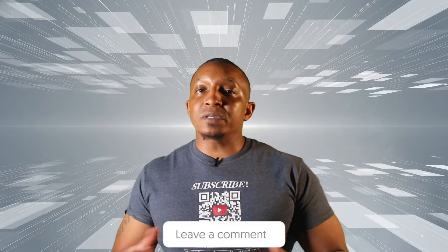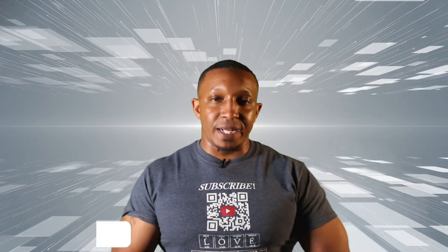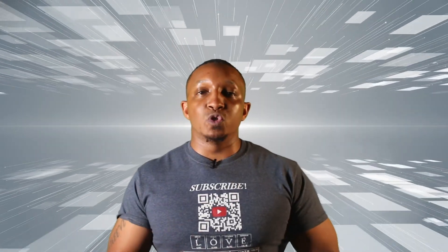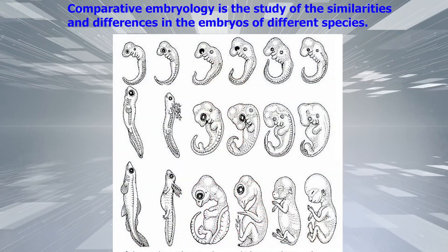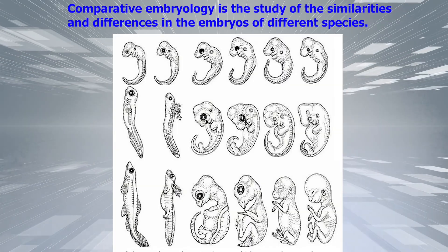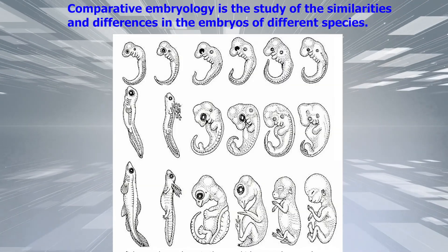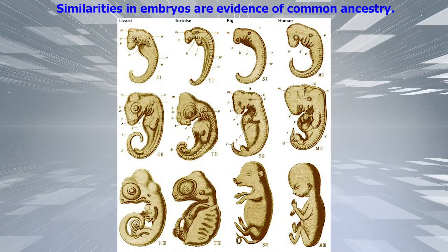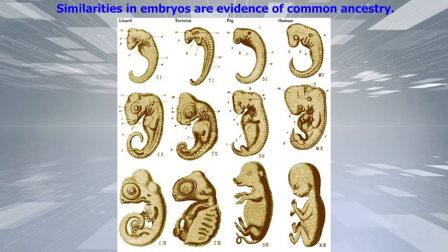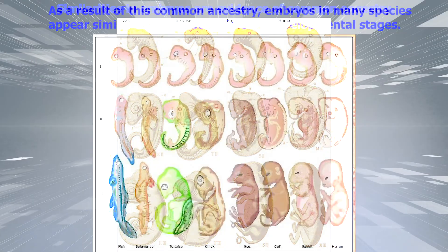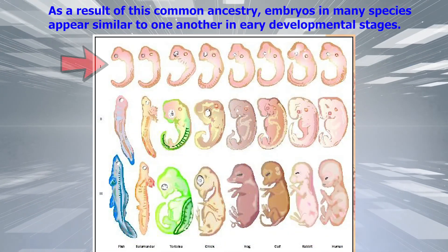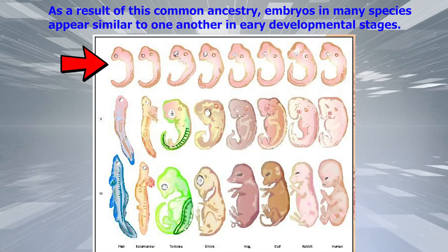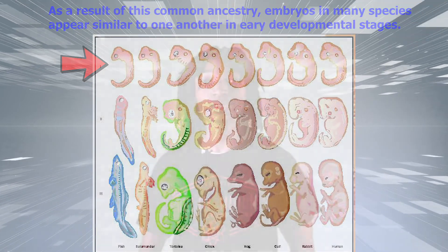Now let's see how comparative embryology provides evidence of evolution. Comparative embryology is the study of the similarities and differences in embryos of different species. Similarities in embryos are evidence of common ancestry. As a result of this common ancestry, embryos in many species appear similar to one another in earlier developmental stages.